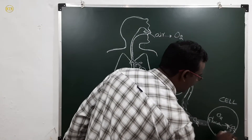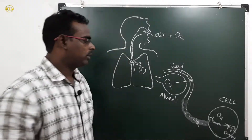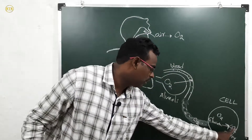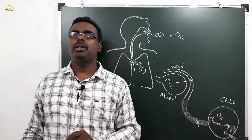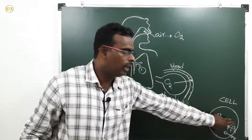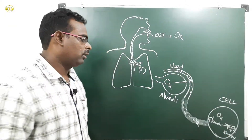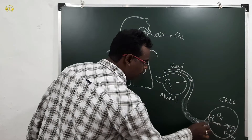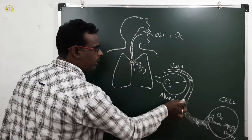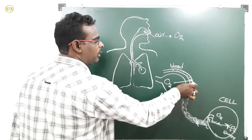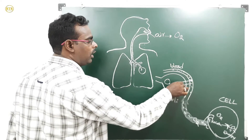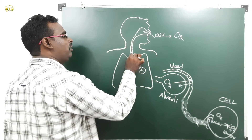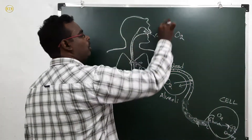By using the oxygen gas, the cell breaks the glucose molecule and releases carbon dioxide and energy. Whatever carbon dioxide is produced inside the cell, it enters back into the blood. By the blood, it moves into the blood capillary, then into the alveolus, and from the alveolus it travels through the windpipe and goes outside the body.